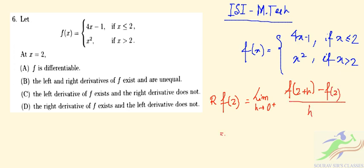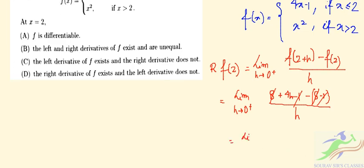So as h tends to 0 plus, f(2+h) is 8 plus 4h minus 1, minus f(2) which is 8 minus 1, divided by h. The 8s and 1s cancel out, leaving limit h tends to 0 plus of 4h by h, which equals 4.